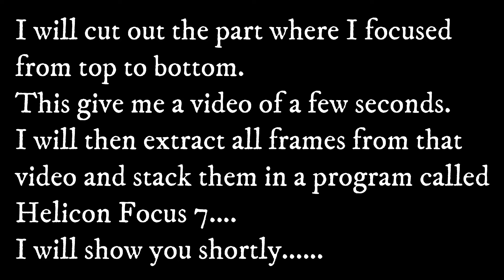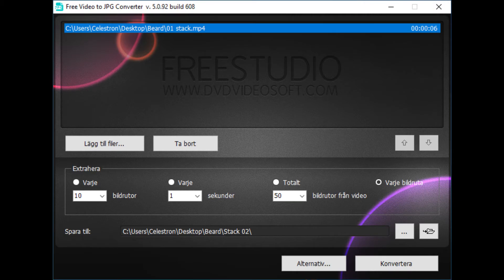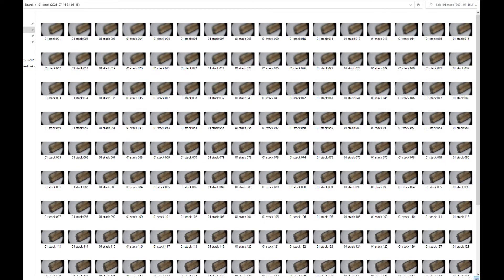So I will cut out the part where I focus from top to bottom. And this will give me a video of a few seconds. I will then extract all the frames from that video and stack them in a program called Helicon Focus 7. I will show you shortly here. This is the piece of video that we get when cut out, about 4 seconds. I will then use this program called Free Video to JPEG Converter. I choose to extract every frame so I get a lot of frames like this.